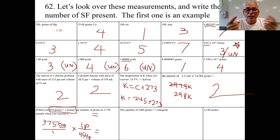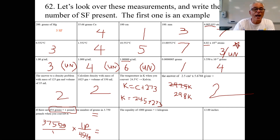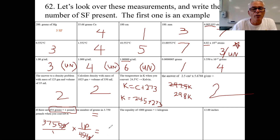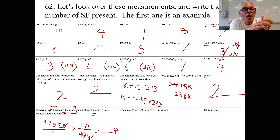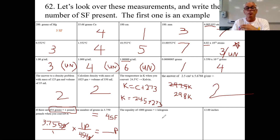Because one pound over 454 grams is an equality, it equals one — so you're essentially multiplying by one. The grams in the numerator cancel with grams in the denominator, and the answer comes out in pounds. Since 454 grams = 1 pound is an equality with unlimited sig figs, the answer is limited by 3.750 grams, which has four significant figures.